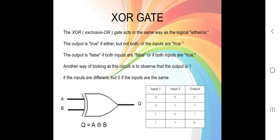Another way of looking at this circuit is to observe the output is one if the inputs are different, but zero if the inputs are the same. For example, if the first input is zero and the second input is zero, the output is zero. If the first input is zero and the second input is one, the output will be one. If the first input is one and the second input is zero, the output will be one. If both inputs are one, the output will be zero.